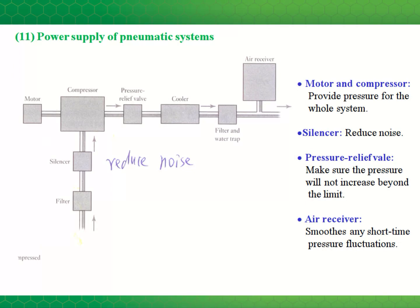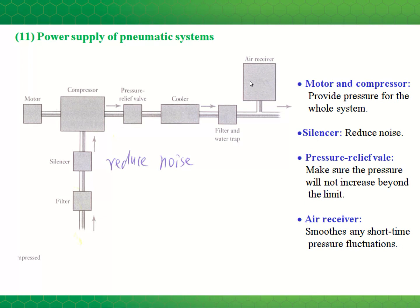Here are the components of a typical pneumatic system. There can be a filter and a silencer before the compressor to reduce noise, and the compressor is driven by an electric motor. Like the hydraulic system, we have a pressure relief valve for safety. Since we're dealing with a compressible fluid, temperature increases after compression — the volume goes down and temperature goes up — so there could be a cooling device. After that, you'd want to trap water to remove moisture from the air and then filter it. The last component shown is an air receiver, a large tank that adds volume to the system to store energy and smooth out fluctuations in pressure.